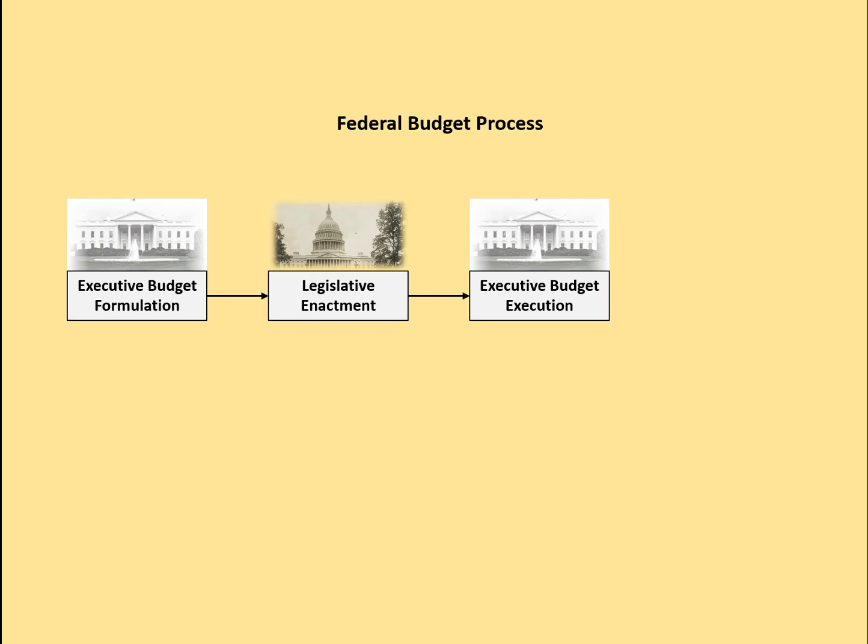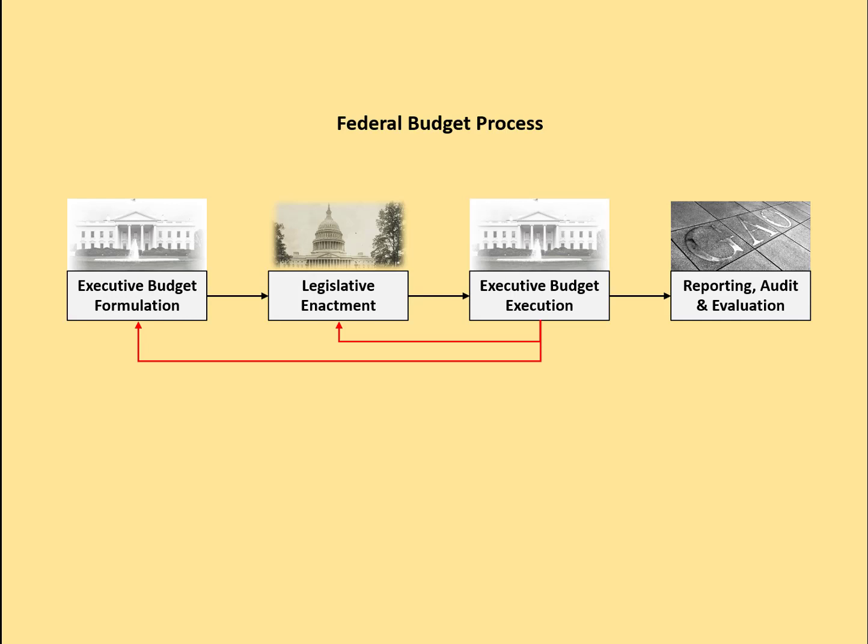These earlier two steps — budget formulation and legislative enactment — look at current budget execution as an input to that decision process. Once the funds have been executed, there's a reporting, accounting, auditing, and evaluation phase to look at how things are going, and that too feeds into the next round of executive branch budget formulation and congressional enactment.